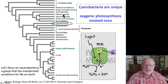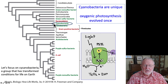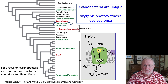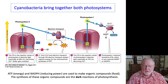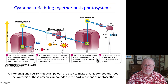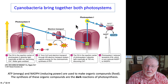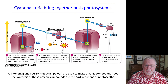Here you can see that cyanobacteria are unique in oxygenic photosynthesis. So now let's focus a little bit more on cyanobacteria itself. To reiterate, cyanobacteria brought together for the first time two photosystems — photosystem II and photosystem I — that had been in purple and green sulfur bacteria before. Now that is the light reaction part of this.